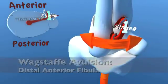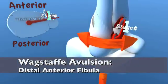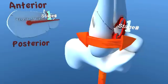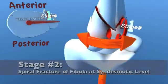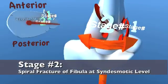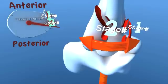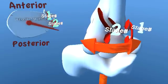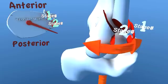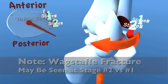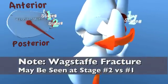As the leg continues to internally rotate, the talus collides with the distal fibula, creating a spiral fracture of the fibula beginning at the level of the syndesmosis. This describes a stage 2 injury, which is the most commonly encountered ankle fracture. A Wagstaffe fracture can also occur during this stage.